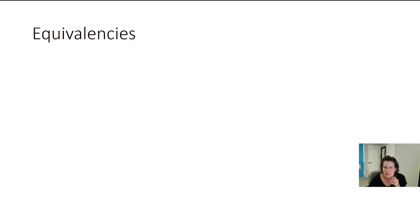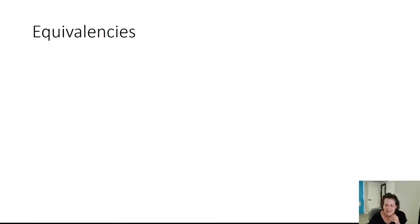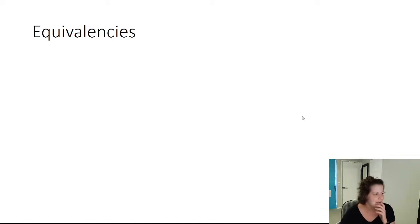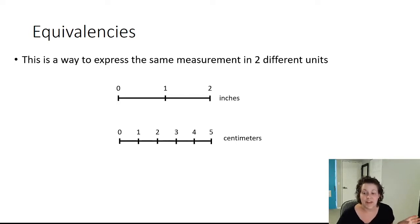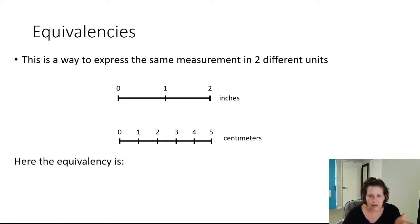So, equivalencies. This is a way to express the same measurement in two different units. So for example, this length here is two inches. That same length could also be said to be five centimeters, about. I'm being a little approximate here. But it's the same length, just measured in two different units. Two inches versus five centimeters. Same length, same distance, just two different units. The equivalency that we're talking about there is actually that one inch is equal to 2.54 centimeters, or 2.54 centimeters is equal to one inch.